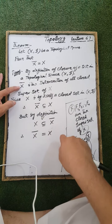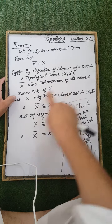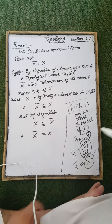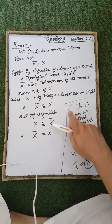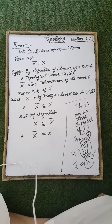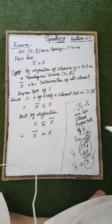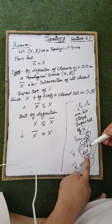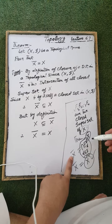The closure of a set X is the intersection of all the closed supersets of the ground set X. That is, F1, F2, up to Fn are the closed supersets of the ground set X, such that their intersection gives the closure of the set X.